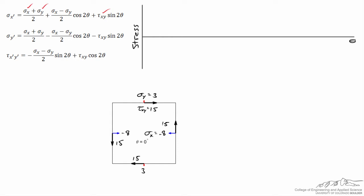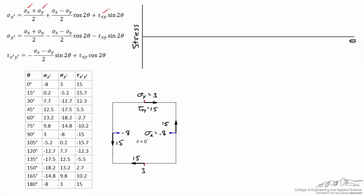With knowledge of the initial state of stress for the unrotated element, let's make a graph of these three stresses as a function of theta. I first calculated values of the transformed stresses as a function of theta, with a total of 13 different data points, running theta in 15-degree increments. One thing to note is that the transformed stresses are identical when we rotate through 180 degrees.